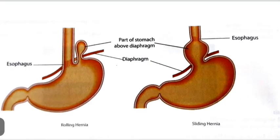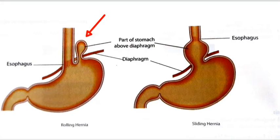As seen in this diagram, when a part or whole of the stomach herniates into the thorax just to the left of the cardio-esophageal junction, it is known as the rolling type of hiatal hernia.